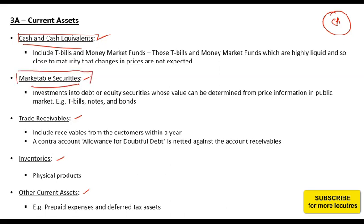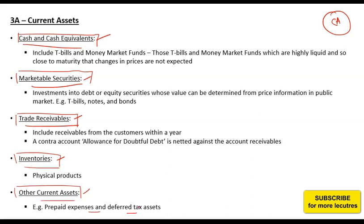Marketable securities includes investments in T-bills, money market securities, or any investment with a life of less than one year. Trade receivables are amounts owed by customers. Inventories are your physical products. Other current assets include prepaid expenses, deferred tax assets, and similar items. These are the major components of current assets, though there can be many others.